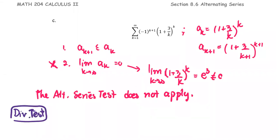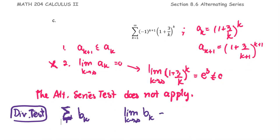For the divergent test, I'm going to use different notation for the term as the series Bk. If we check the limit of Bk as k approaches infinity and the limit is not equal to 0, therefore the series Bk diverges.